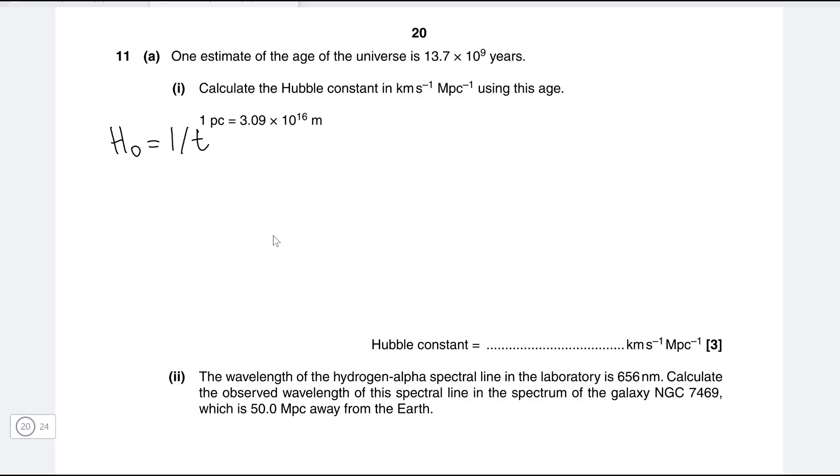Okay so we can use the fact that we're given that the age of the universe is 13.7 billion years which is 13.7 times 10 to the 9 times 365 days. Each of them has 24 hours. Each of them has 60 minutes times 60 seconds like so. And then we're going to get that Hubble's constant in SI units is about 2.314. Let's leave it as 2.31 multiplied by 10 to the power of minus 18 seconds to the power of minus 1.